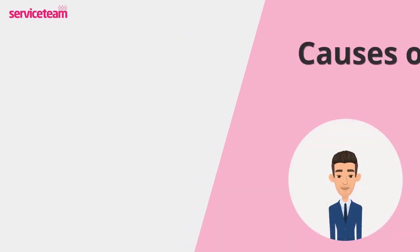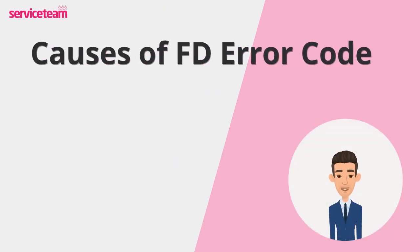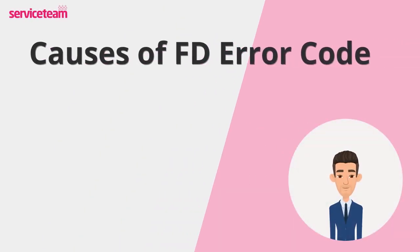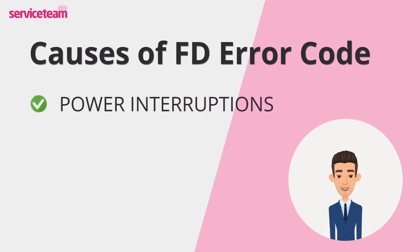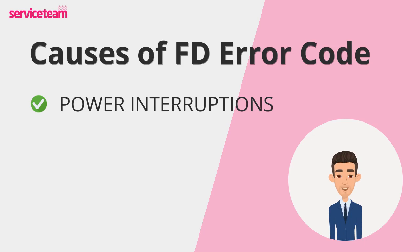Let's see what causes the FD Worcester error code. Starting with the most common cause — a power loss to your boiler. This could happen due to a power outage in your home, a tripped circuit breaker, or an issue with your electrical supply.